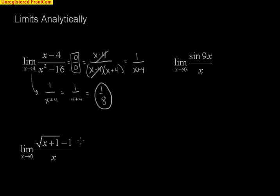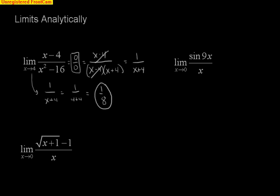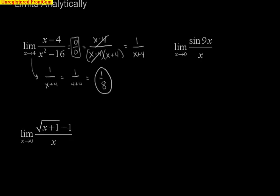For the one down here, we talked about in class being able to multiply by the conjugate. Because once again, if I try to plug in 0, I always try direct substitution first. If I plug in 0, I'll wind up with 0 over 0 again. So I want to multiply by the conjugate.